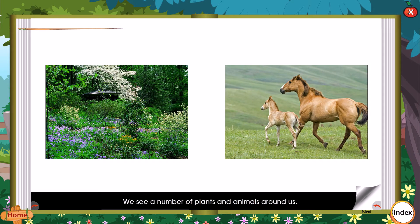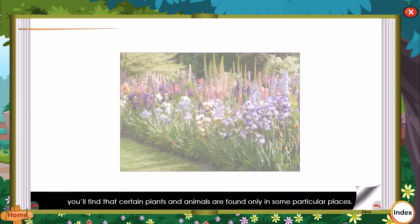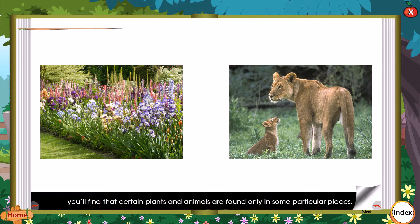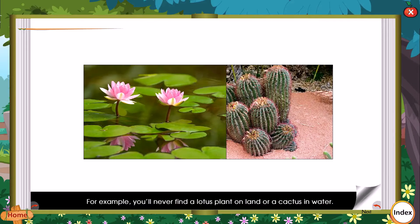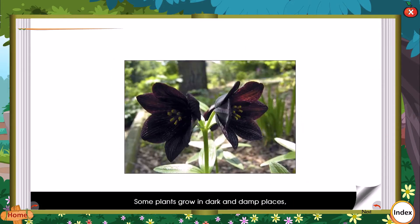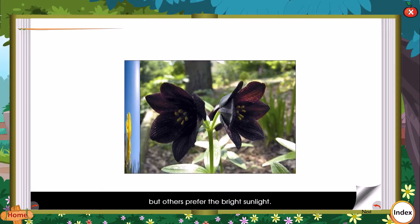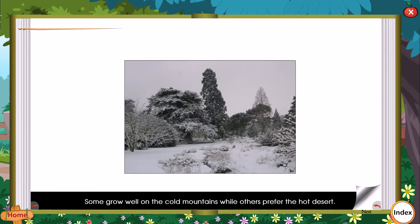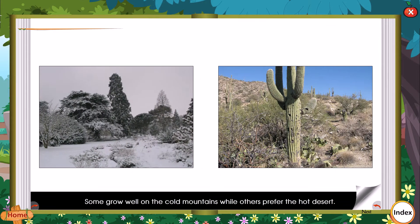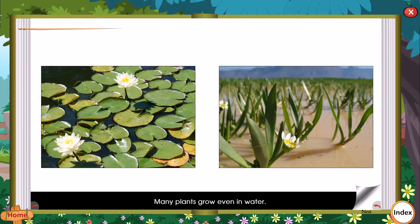We see a number of plants and animals around us. If you observe carefully, you will find that certain plants and animals are found only in some particular places. For example, you will never find a lotus plant on land, or a cactus in water. Some plants grow in dark and damp places, but others prefer bright sunlight. Some grow well on cold mountains, while others prefer the hot desert. Many plants grow even in water. Plants differ from each other depending on the place where they grow.